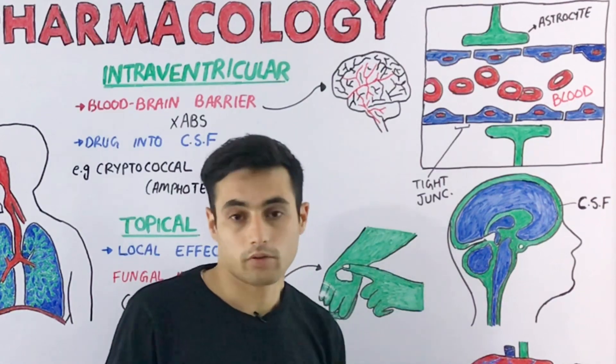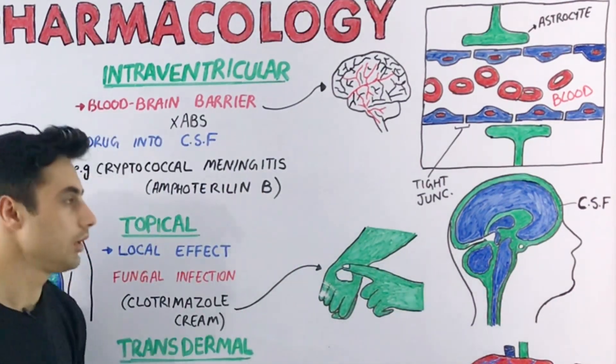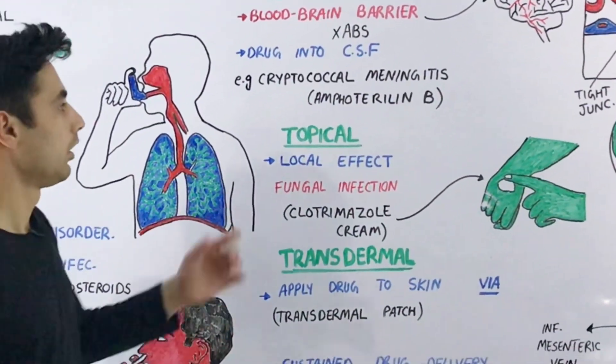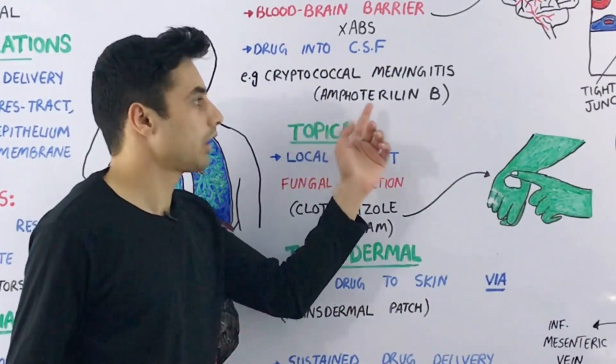This allows rapid drug delivery to your central nervous system. An example is amphotericin B, a drug used to treat cryptococcal meningitis.